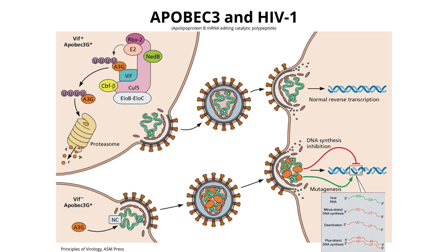There may be viruses that work with APOBEC to use it as a source of diversity. These proteins are in our cells and have other roles as well, generating diversity. The bottom illustration showing APOBEC incorporated into a particle was done with a VIF-minus mutant—since VIF is an antagonist of APOBEC, when it's absent, APOBEC can be incorporated. That's why HIV normally can replicate without any effect from APOBEC.